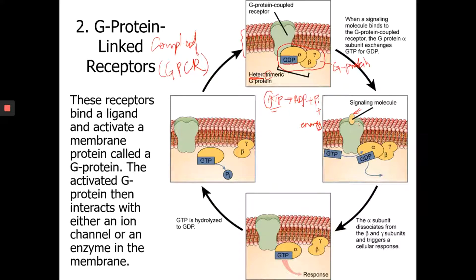Because the binding is going to cause a conformational change of this protein receptor. And then because of the structural change, it's going to activate the G-protein. How does it activate the G-protein?